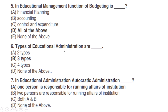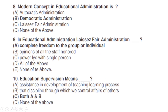Types of educational administration: correct option B — three types. In autocratic administration: correct option A — one person is responsible for running affairs of institutions. The modern concept in educational administration is: correct option B — democratic administration. Laissez-faire administration: correct option A — complete freedom to the group or individual.